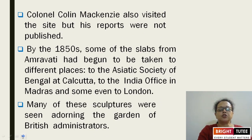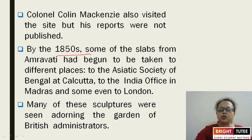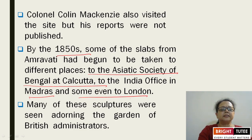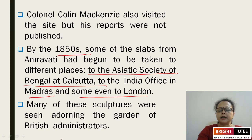Colin Mackenzie also visited the site, but his reports were not published. In the 1850s, some of the slabs from Amravati had begun to be taken to different places — to the Asiatic Society of Bengal at Calcutta, to the India Office in Madras, and some even to London. Many of these sculptures were seen adorning the gardens of British administrators.